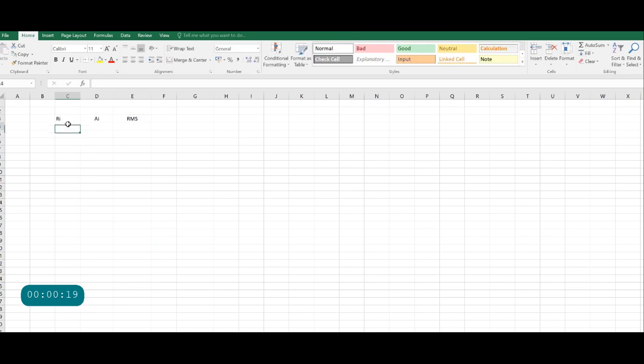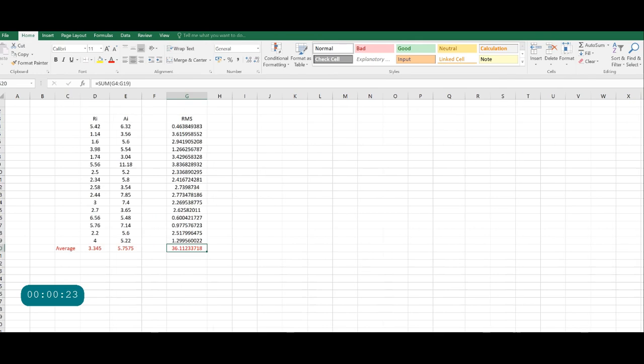Enter all values of Ri in this column, Ai in this column. Then you can calculate RMS by writing the formula in this toolbar. You get the RMS values for each pair of rejected gap and accepted gap, and this is the sum of all values.